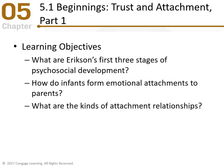The first part of Chapter 5 is 'Beginnings: Trust and Attachment.' Our learning objectives are: What are Erikson's first three stages of psychosocial development? How do infants form emotional attachments to parents, and why is that important? If you don't have an emotional attachment, can you imagine how you would survive? And what are the kinds of attachment relationships? There's not just one type — there are different types.